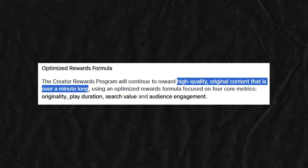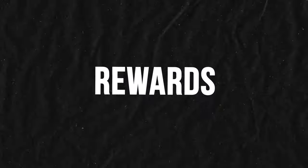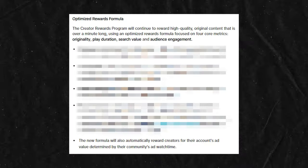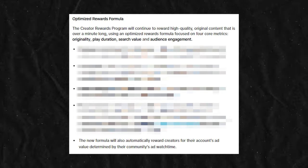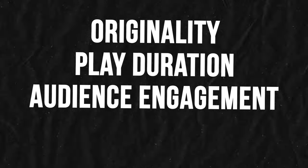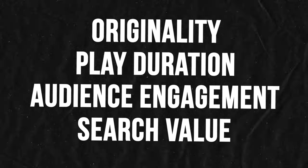Similar to Creativity Beta, TikTok's new Creator Rewards Program is for original content that's over a minute long. The program uses something called the Optimized Rewards Formula to pay creators. The formula uses four key metrics to determine how much creators will be paid, and I'm going to go in-depth into all four because it is a massive change from the previous program. The four key metrics are: originality, play duration, audience engagement, and search value.